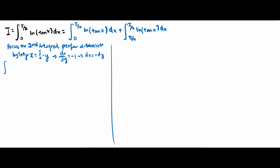So the integral from pi over 4 to pi over 2 of ln(tan x) dx. This is equivalent to: we know x equals pi over 2 minus y, so when x equals pi over 4, we solve for y to get y equals pi over 4.